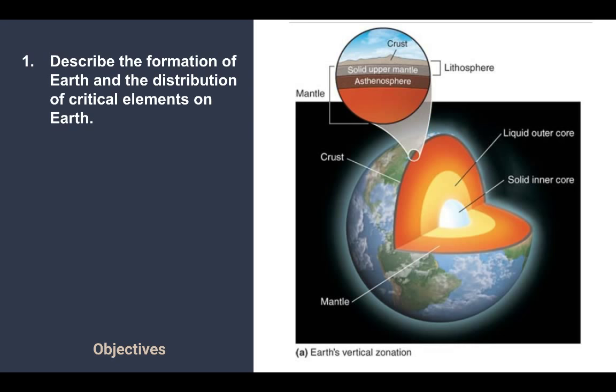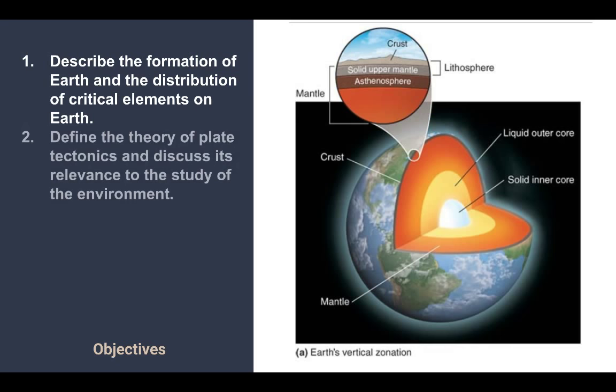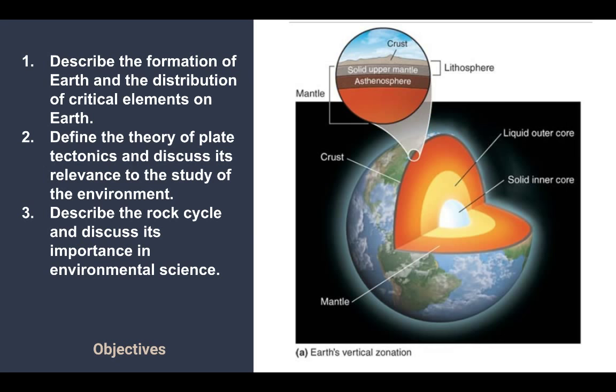So our objectives here, we're going to look at the distribution of elements on Earth, how they got there and how they formed. We're going to look at the theory of plate tectonics and how it's relevant in the study of the environment. And finally, we're going to end with the description of the rock cycle and how it's important in environmental science.